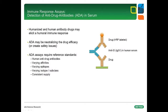Drug-specific anti-idiotypic antibodies can be used to establish and calibrate immune response assays, since they behave like natural human antibodies developed by patients against the drug. Measuring the immune response to a drug, i.e. the development of anti-drug antibodies, or ADA, is a prerequisite of regulatory authorities during drug development. A typical bridging assay format using an anti-idiotypic antibody as an ADA surrogate is shown.